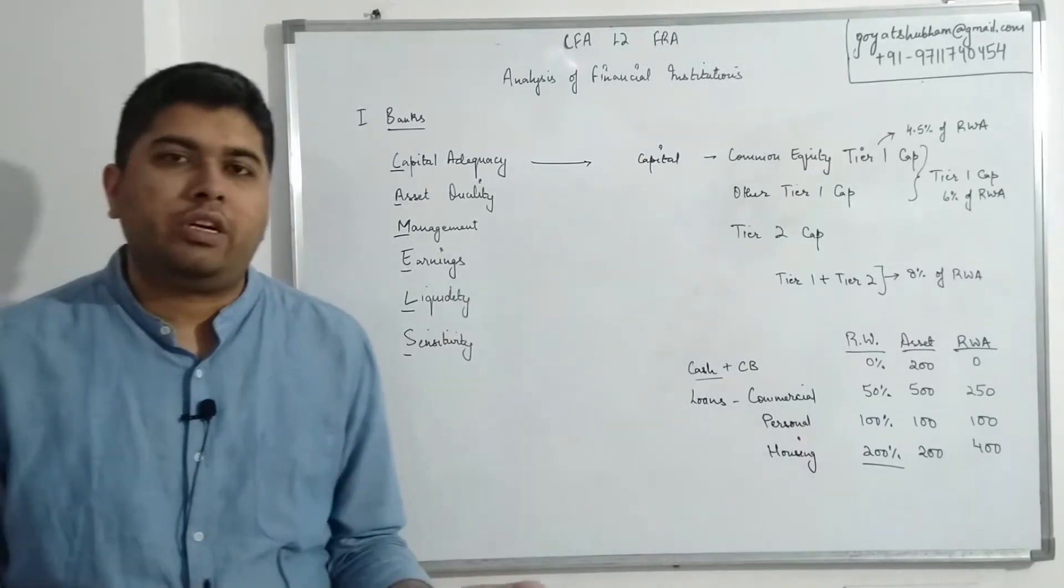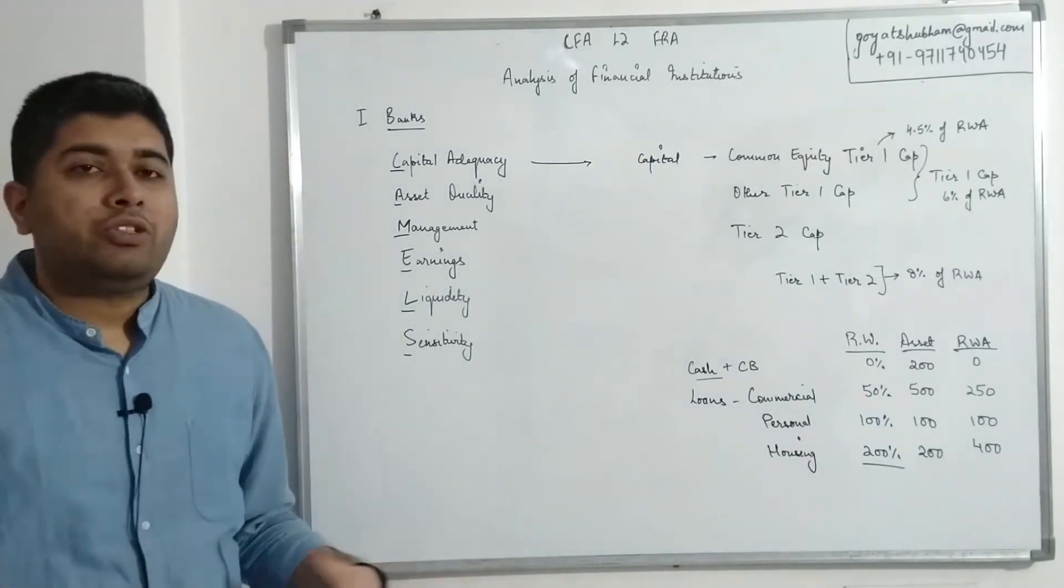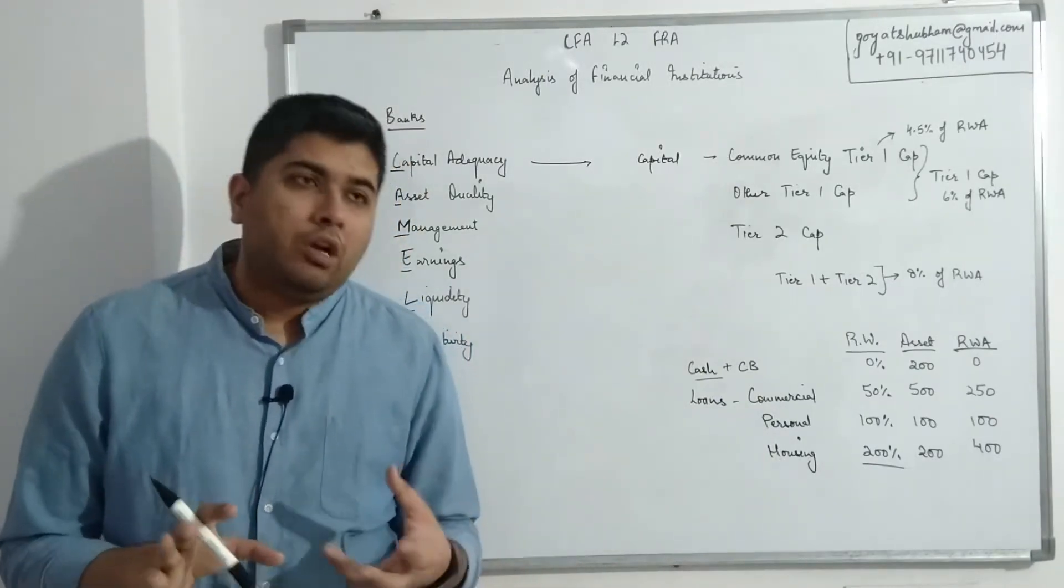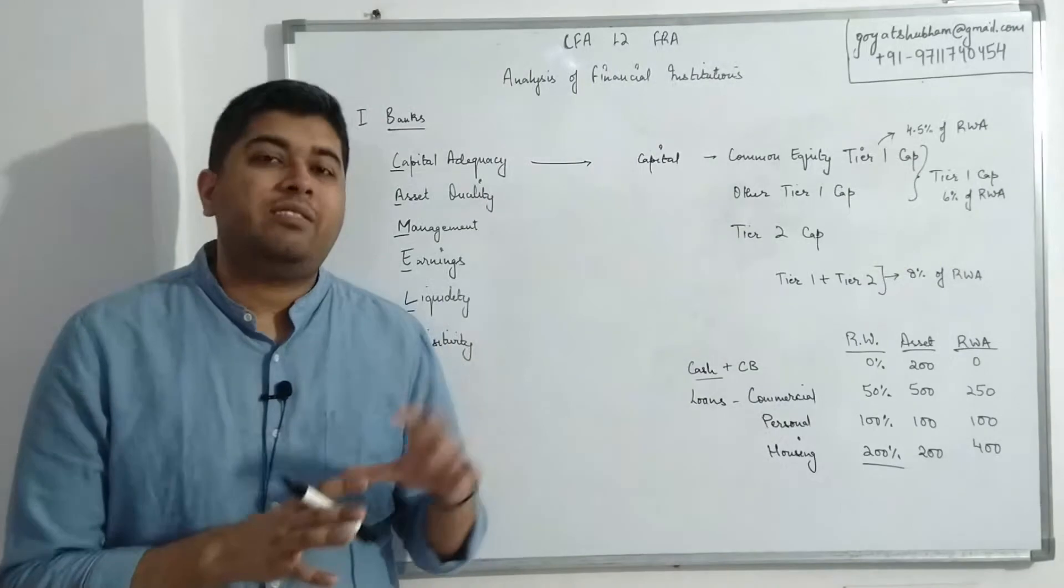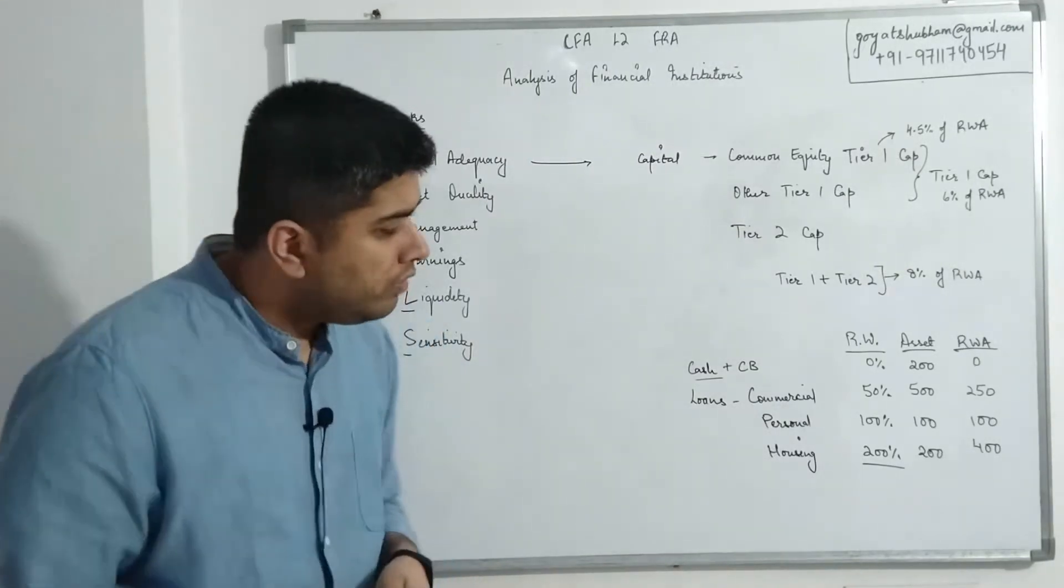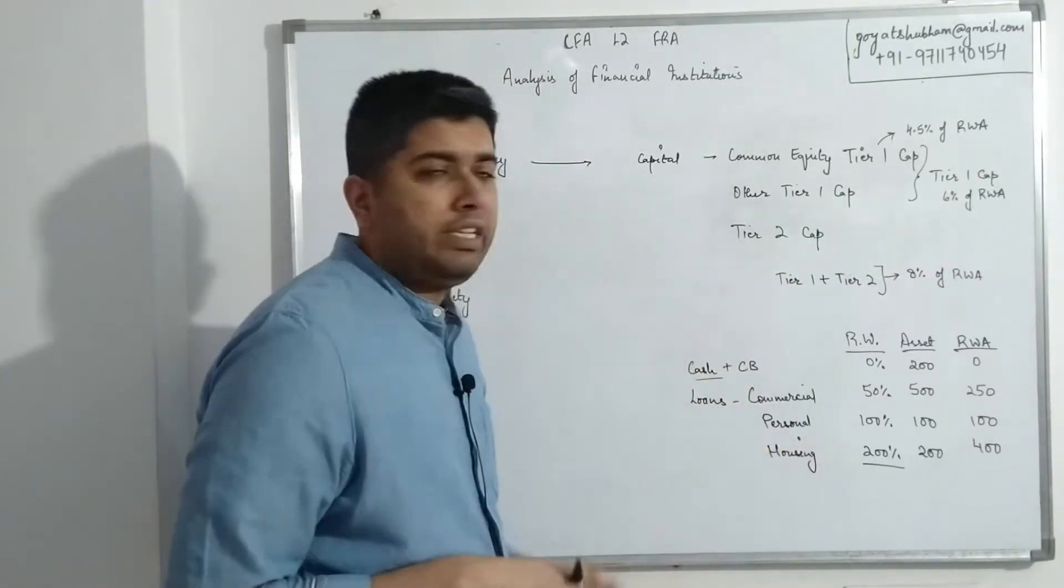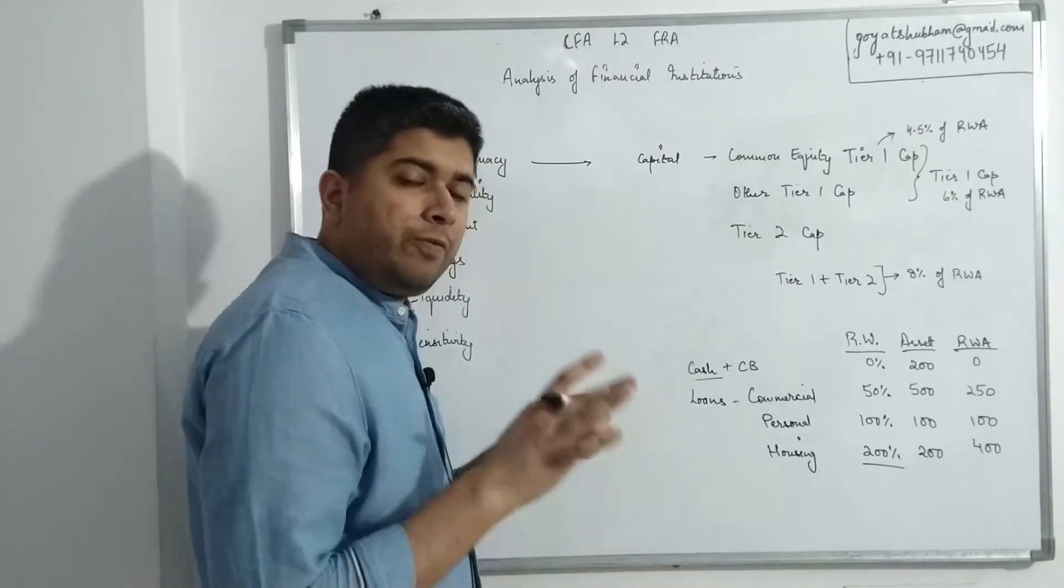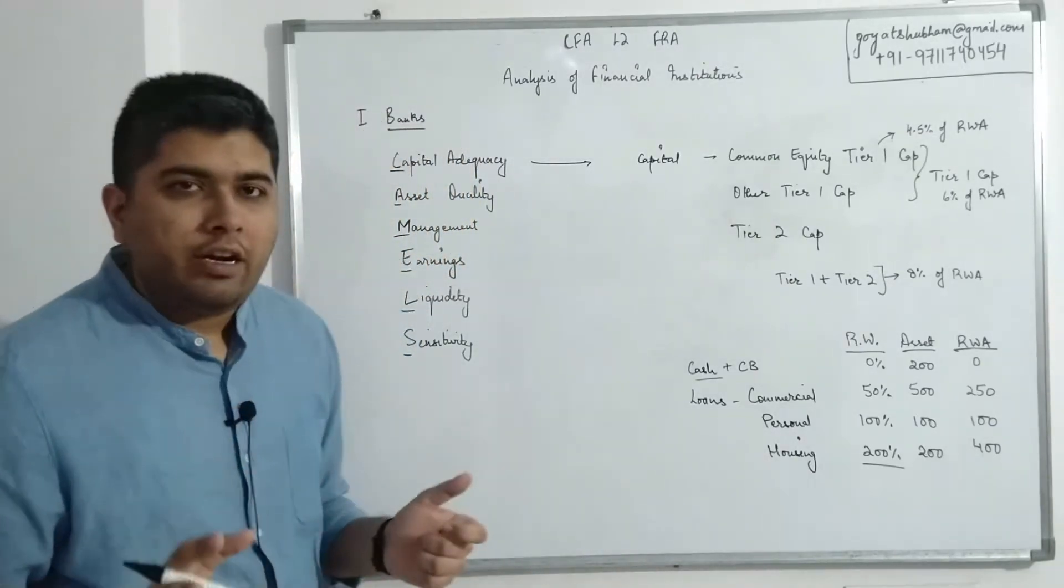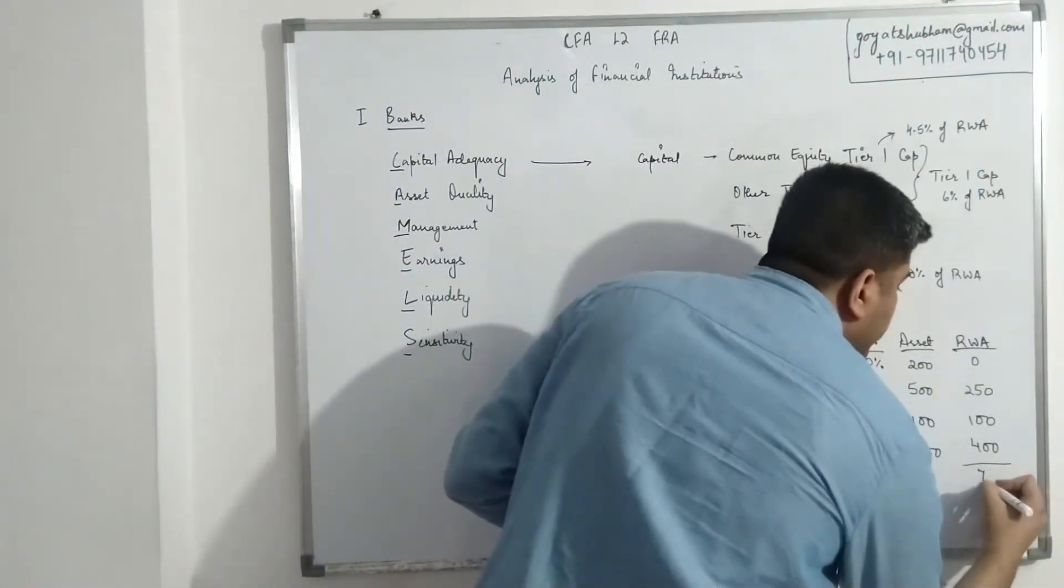Let's say the value of the asset is 200 million, 500 million, 100 million, and 200 million. All we have to do to estimate risk-weighted assets is to multiply the risk weights with the assets. So risk-weighted asset is simply giving us an idea that how much worth of the assets of the bank are considered risky in nature. Using these risk weights and assets, this becomes zero. If I multiply 50% with 500, this is 250.